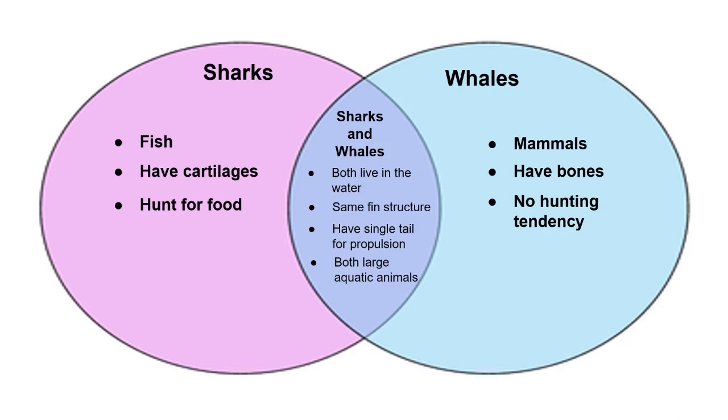This is the most appropriate diagram to use in transcoding the previous paragraph. In the Venn diagram, you can find the different and similar characteristics of sharks and whales. Sharks are fish, have cartilages, and hunt for food. Whales are mammals, have bones, and have no hunting tendency. The similarities of sharks and whales are: they both live in water, have the same fin structure, have a single tail for propulsion, and are both large aquatic animals.